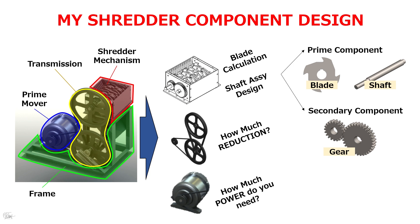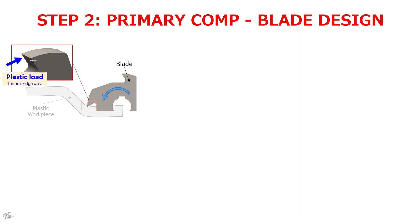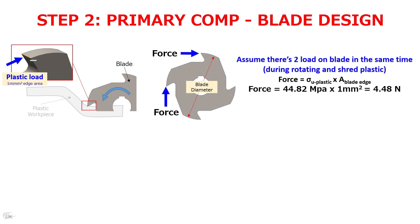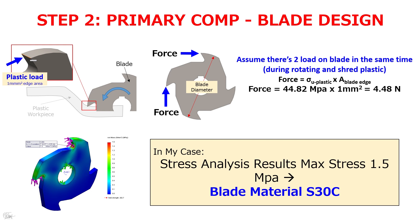The next step is blade design. During the cutting time, plastic will give a load to the edge of the cutting blade area. I assume there are two loads on the blade at the same time during rotating and shredding plastic, and the force on one blade will be about 4.48 newtons. An important point is we have to determine the material we need. You can use simulation in 3D CAD software like SolidWorks, CATIA, or Solid Edge. In my case, the stress analysis result max stress is 1.5 megapascals, so the blade material I chose is S30C.